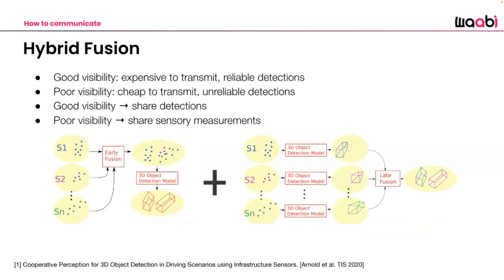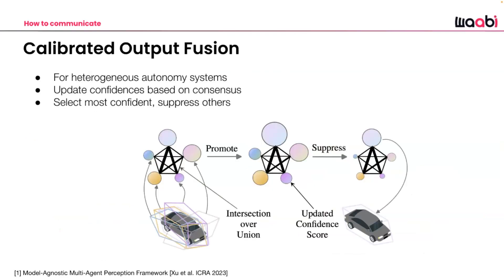Hybrid fusion methods combine both sensor fusion and output fusion — sensor fusion for regions that are far away or less certain, and output fusion for regions with higher confidence. There's also work that stores uncertainty values with output detections; the perception model can output confidence values for bounding boxes, allowing suppression of uncertain detections and boosting of confident ones, resulting in more reliable detection across the network.